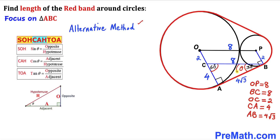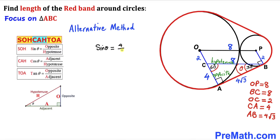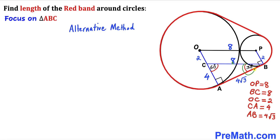As an alternative method, calling angle ABC theta and using SOHCAHTOA: sin(theta) equals opposite over hypotenuse, which is 4 divided by 8, giving sin(theta) equals 1/2. Therefore theta equals 30 degrees. Once we have this 30 degrees and the known 90-degree angle, the remaining angle must be 60 degrees since the angles must sum to 180 degrees.